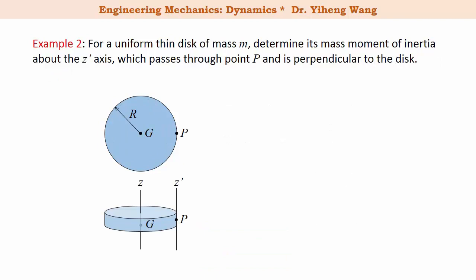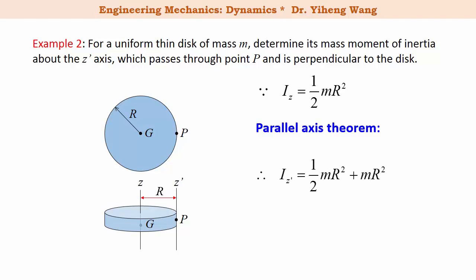Let's look at a similar example. For the same disk, we now need to calculate the mass moment of inertia about a z-prime axis that is also perpendicular to the disk but passes through a point on the edge of the disk. Since the z-prime axis is parallel to the z axis, and we already determined that I_z equals one-half m R², we apply the parallel axis theorem. The perpendicular distance between the two axes is the radius R, so I_z-prime equals one-half m R² plus m R², which equals three-halves m R².